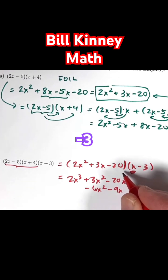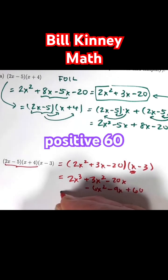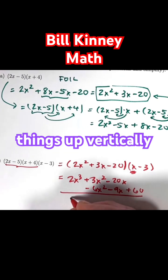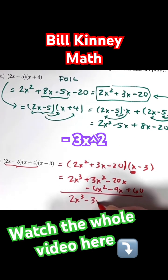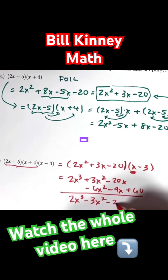Then negative 3 times negative 20 is positive 60. Add these things up vertically, combine the like terms, we get 2x cubed minus 3x squared minus 29x plus 60.